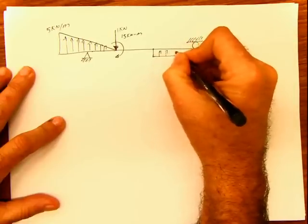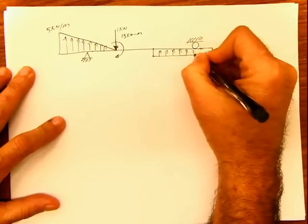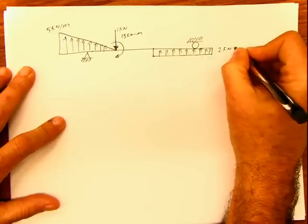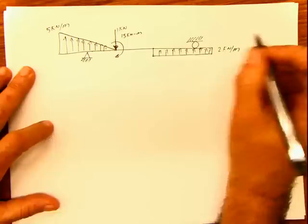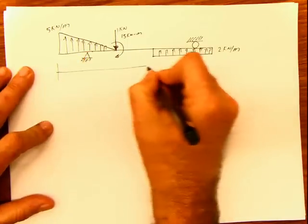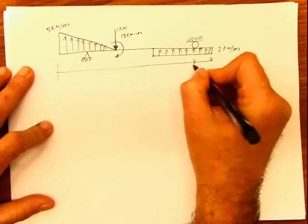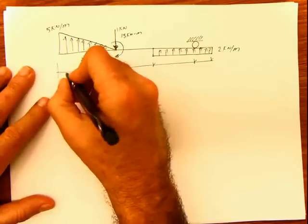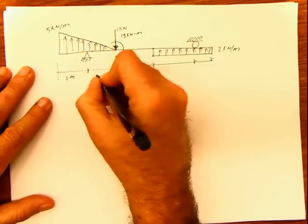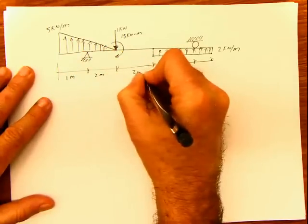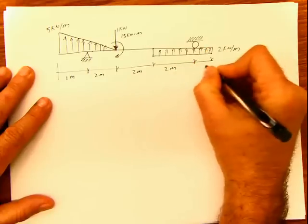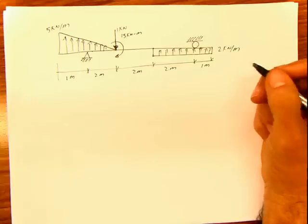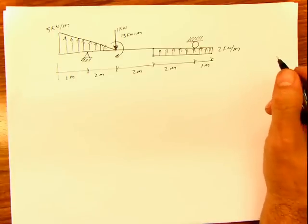This force is acting upward also. The value of this triangular load is 5 kilonewton per meter. The rectangular load value is 2 kilonewton per meter. And then the distances are 1 meter, 2 meters, 2 meters, 2 meters, and 1 meter. OK, I think that's all that I have.